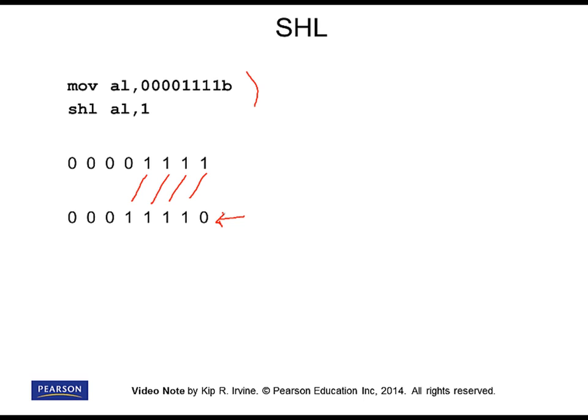Whenever you have a new bit to be filled, it's going to be filled with a zero. Meanwhile, the bit that was on the high end of the original number disappears — it actually goes into the carry flag. If we wanted to check that, we could find out if a bit was in that position originally by checking the value of the carry flag.